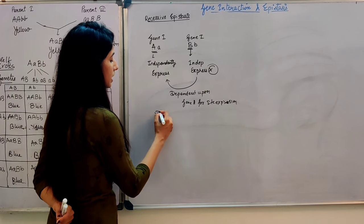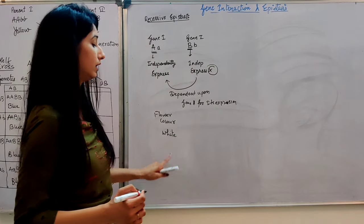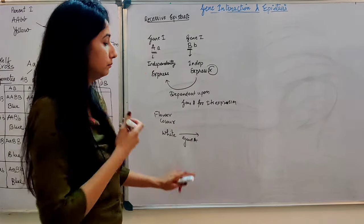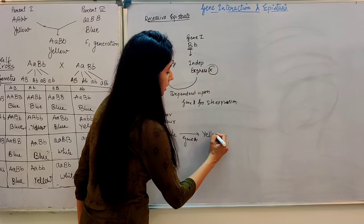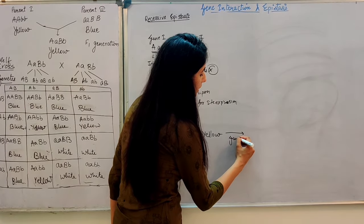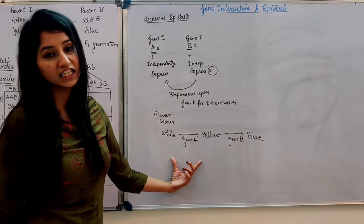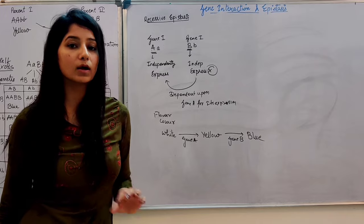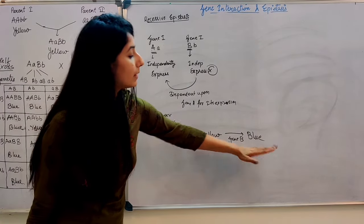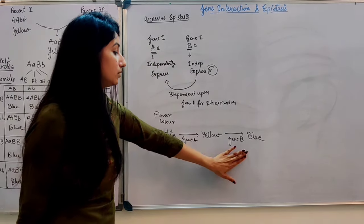For example, if we take a flower color example: white color has no pigment. Gene A produces a pigment that makes the flower yellow. Gene B then converts the yellow pigment to blue. So gene B will not produce blue color until gene A has first produced the yellow pigment — gene B is dependent on gene A.